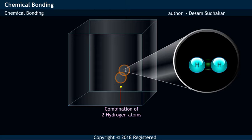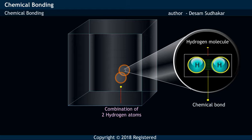When two hydrogen atoms combine with each other, a chemical bond is formed between the two atoms and thereby forms a hydrogen molecule.